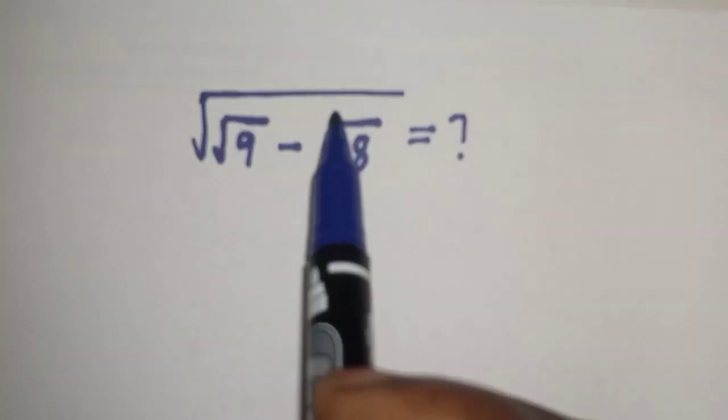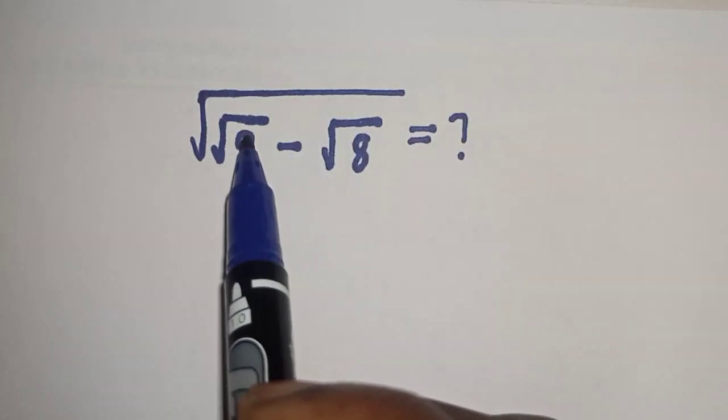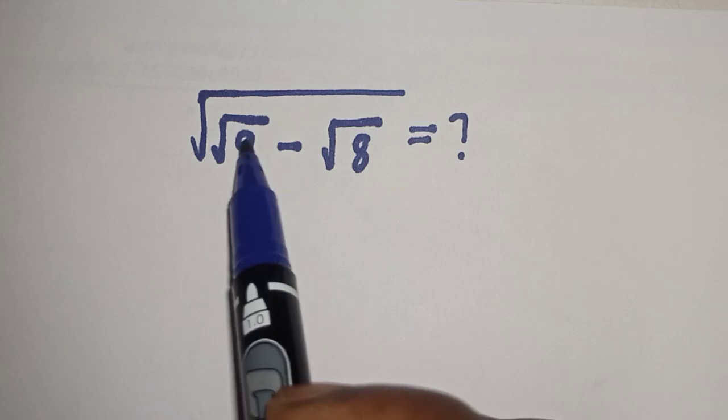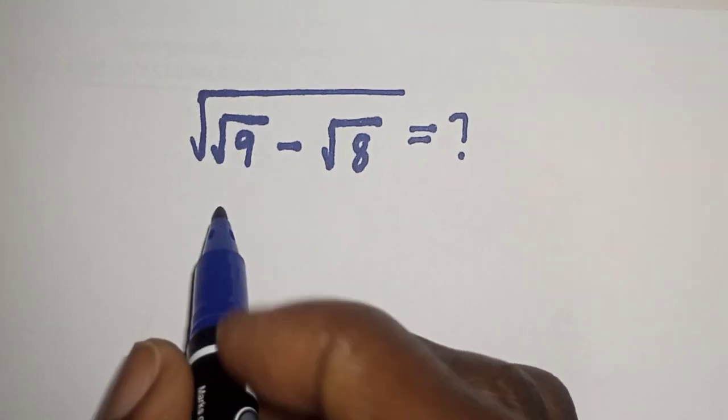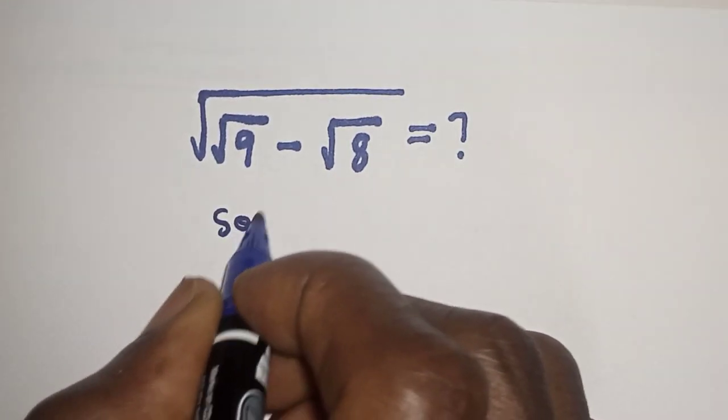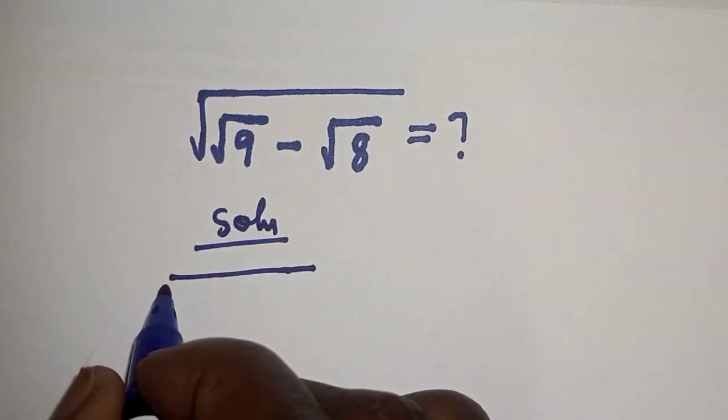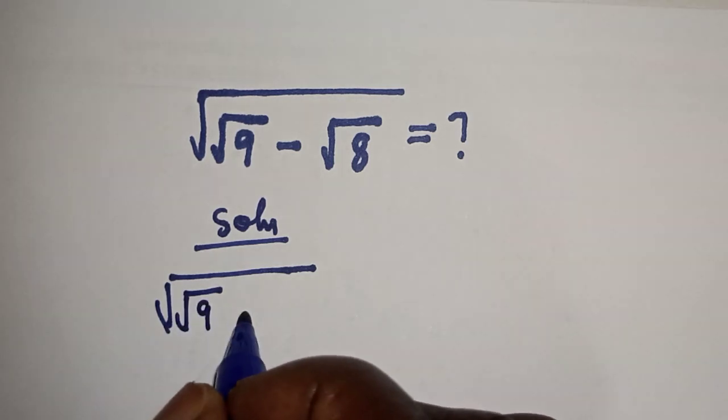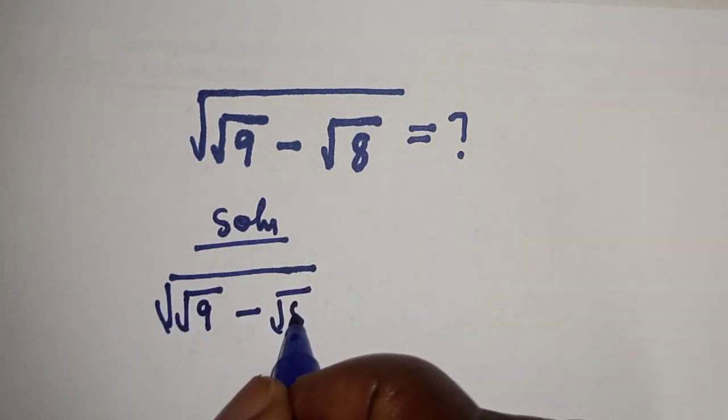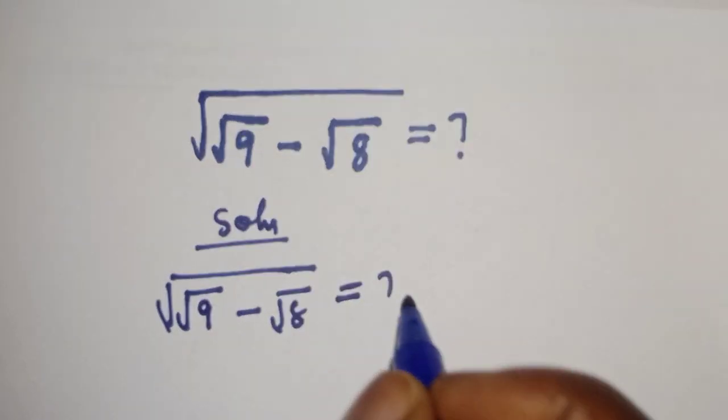Hello, welcome to MathJiz. In this class we want to simplify this nice radical problem. Like, share, comment and subscribe. Solution: we have square root of square root of 9 minus square root of 8 is unknown.